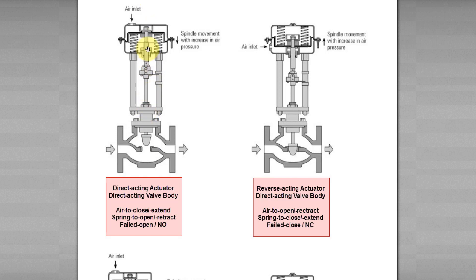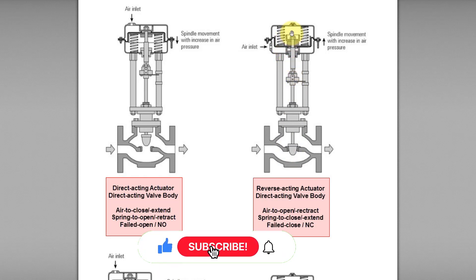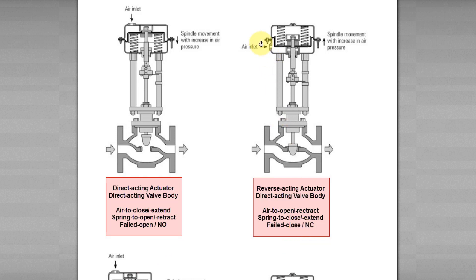Similarly, this case is called air-to-open or air-to-retract control valve because when air is applied to the lower portion of the actuator, it pushes the diaphragm and spring outward, causing the shaft or stem to retract outward and open the valve body. It is also called spring to close, spring to extend, or fail-closed, because when the air is cut off, the spring bounces downward, the stem extends downward, and closes the valve.